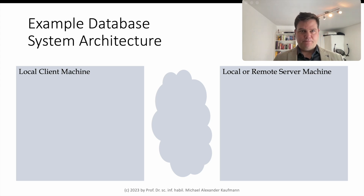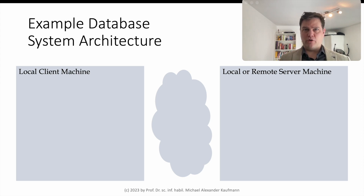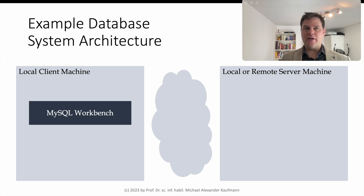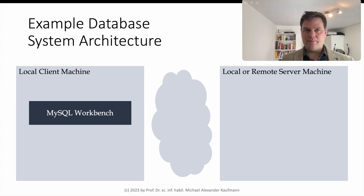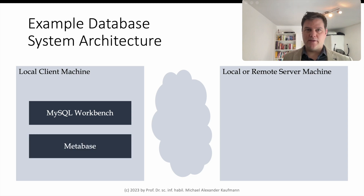Here we'll see the architecture we'll use for our movie recommendation application. The architecture consists of three parts: the local client, the server and the cloud connecting the two. On the left side, we see the local client machine that the creator of the app is working from — likely the developer's workstation or laptop. On the client machine, we'll run MySQL Workbench, a powerful database administration software that is free, open source and runs on multiple platforms. We will use this to create the database structure, load the data, program SQL queries for data analysis, and secure and backup the database. We'll also run Metabase, a database tool that makes it easy to implement visualizations of the data analysis for simple user interactions.